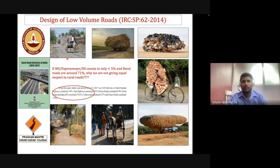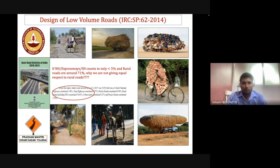As everyone knows, rural roads are subjected to different vehicles — bullock carts, tractors carrying sugarcane after harvest, and various vehicles used for transporting goods and humans. It should be noted that rural roads have gained momentum after the Pradhan Mantri Gram Sadak Yojana scheme, which was provided to give connectivity to habitations with more than 1000 people. According to the Basic Road Statistics of India, national highways and state highways account for less than 4% of roads, whereas rural roads account for around 70%.